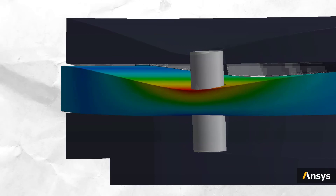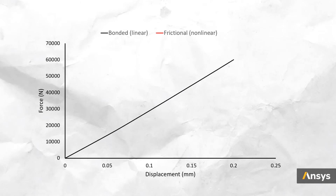Now let's get realistic and replace the bonded contact with frictional contact, so the graphite can slide when it deforms. This is closer to reality. Let's compare the force-displacement response for these two cases. In the case of bonded contact, we do get a linear response. But when we replace it with a more realistic contact type, the response is clearly nonlinear. Surely, the second analysis is more realistic.